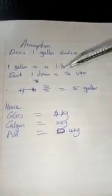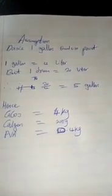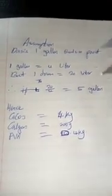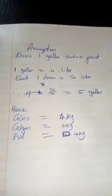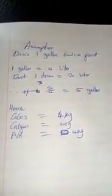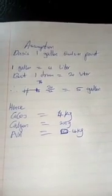Just stay tuned and see how it is being calculated. Assumption: we are assuming we want to produce one gallon. One gallon of emulsion paint equals four liters. One drum equals 20 liters. Therefore, 20 divided by 4 gives you five gallons, which means five gallons give you one drum — that is, 4 liters times five gives you 20 liters or one drum.